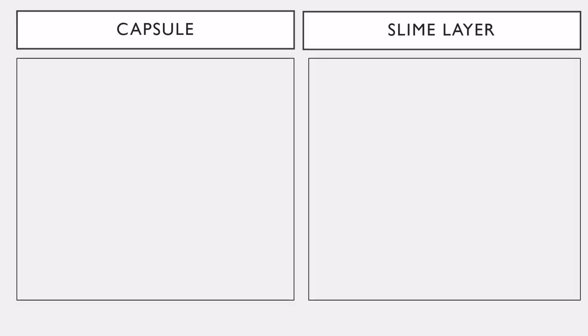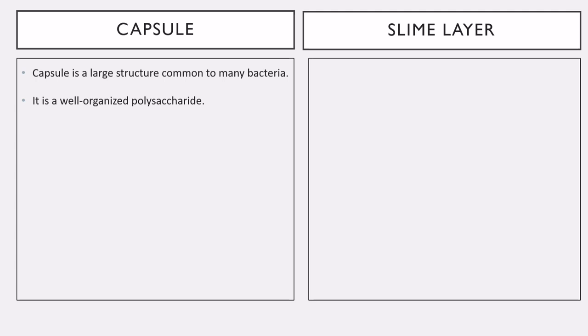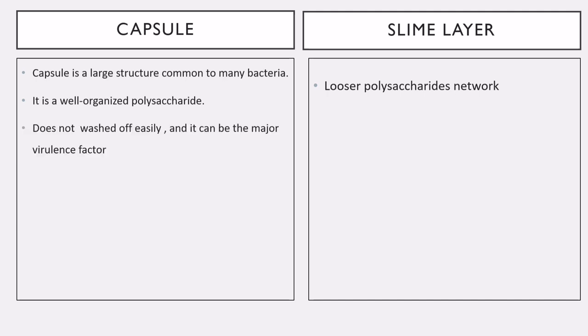Starting with the capsule or slime layer: the capsule is a large component present outside of the bacteria. Both capsule and slime layer are made up of polysaccharide, but the capsule has a very well-organized polysaccharide network, whereas the slime layer has a looser polysaccharide network. Because capsules are well organized, they are not easy to wash away, which gives the capsule its major virulence factor and protects the bacteria from foreign substances like white blood cells — it helps protect bacteria from phagocytosis.